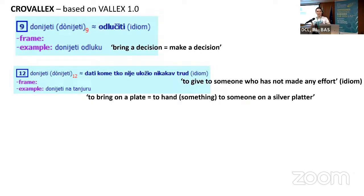In CroValex, a verb meaning 'bring' has in the definition field a simple verb equivalent — 'to decide' — and the frame is empty, with the example being a light verb construction 'to bring a decision', meaning 'to make a decision'. In the same manner, verbal idioms are also treated: 'bring to give to someone who has not made any effort', with the example 'to bring on a plate' — meaning in Croatian to hand something to someone on a silver platter.